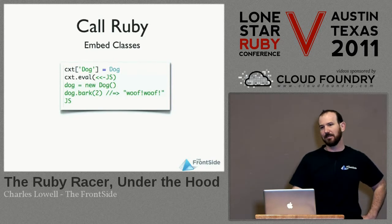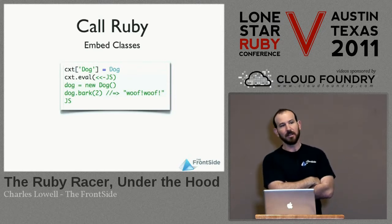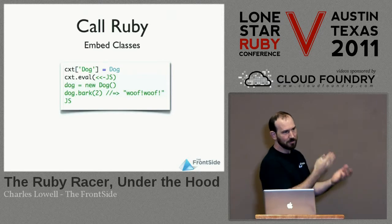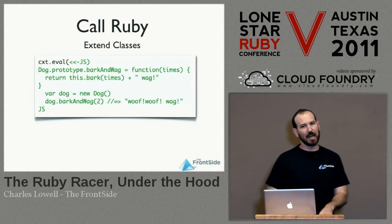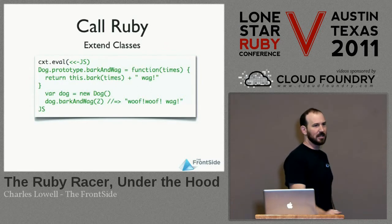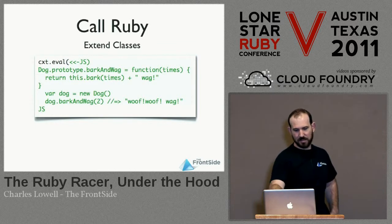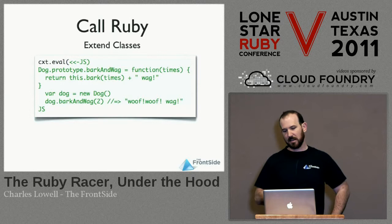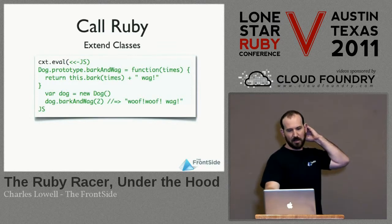Another interesting thing: you can actually embed a class right into your context. That will create a corresponding JavaScript constructor which, when invoked, will create an instance of the Ruby class and return a reference to it in JavaScript. Here we've got our same Dog class — we take that class object and put it right in there, and we can instantiate it and away we go. An interesting side effect is that you can actually extend Ruby classes from JavaScript. You can access the prototype object of that Dog class and define bark and wag functions — bark implemented in Ruby, wag implemented in JavaScript.